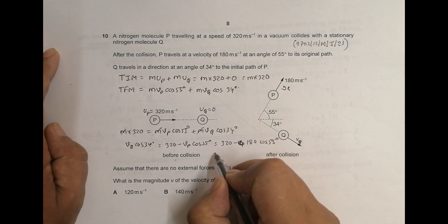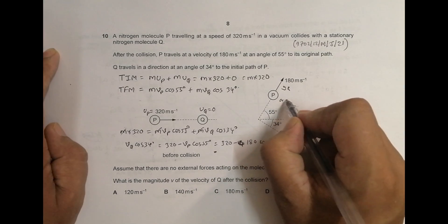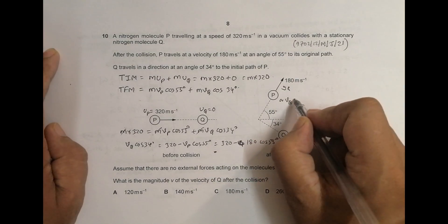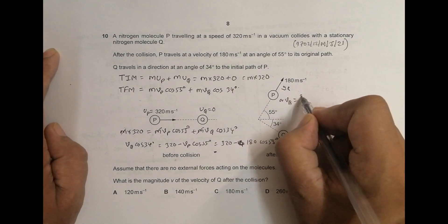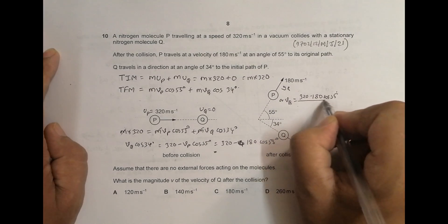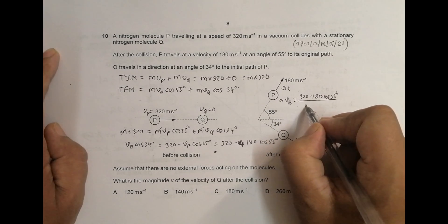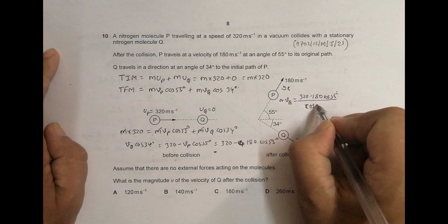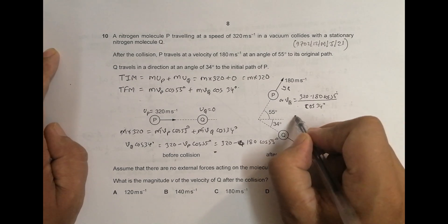So this gives us, or I can say, V Q equal to 320 minus 180 cos of 55 degrees by, by cos of 34 degrees. So when we do the calculations,